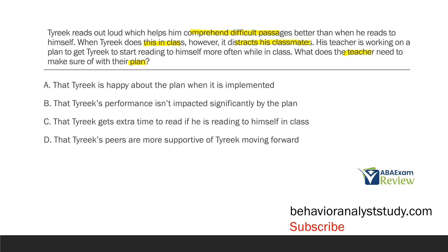In ABA, we're looking to change behavior in an effective way, but also in a way that's going to be okay socially. It's great that Tariq has learned a strategy which helps him comprehend passages better, but is it always the most socially valid strategy? In this case, no. So the teacher is going to develop a plan to get Tariq to start reading to himself more often while in class — essentially replacing reading out loud with reading to himself, which seems like a good idea. But what does she need to be sure of if she's going to continue with this plan?